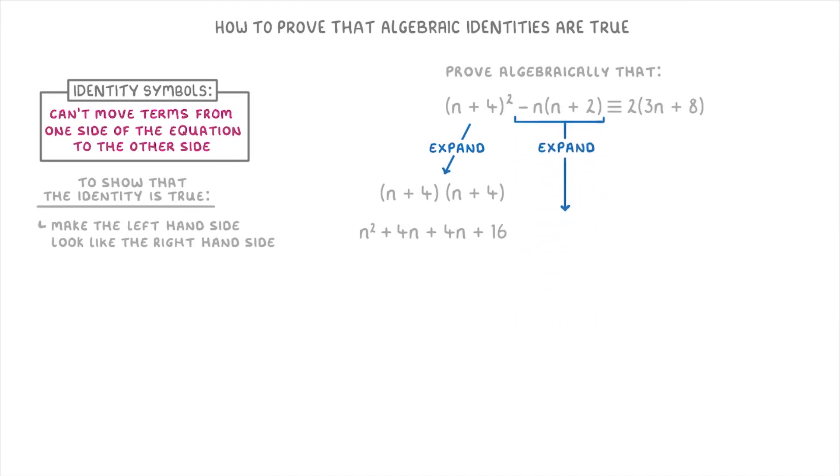Next, we can expand this other bracket to get minus n squared minus 2n. And then if we simplify all of this, the n squareds cancel out and we're left with 6n plus 16.